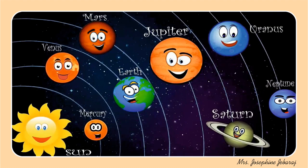Let us say the names of the 8 planets: 1. Mercury, 2. Venus, 3. Earth, 4. Mars, 5. Jupiter, 6. Saturn, 7. Uranus, and 8. Neptune.